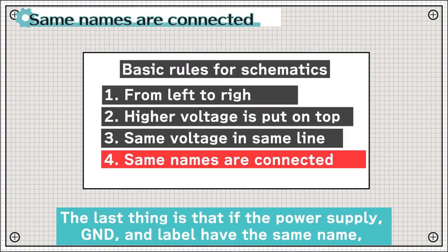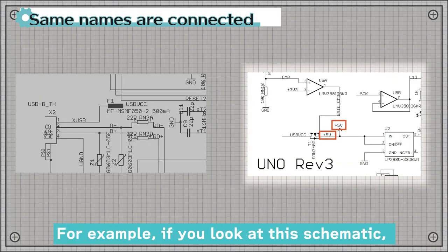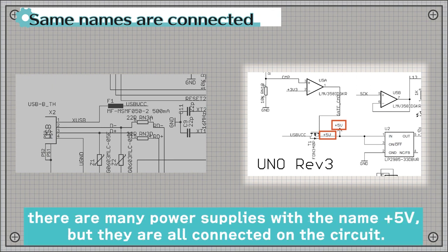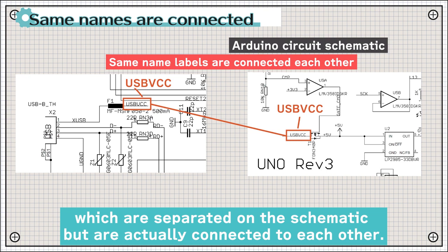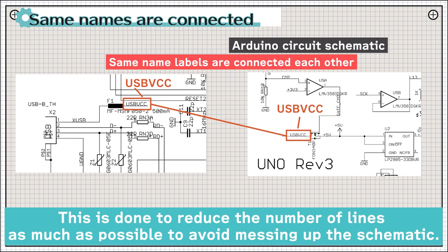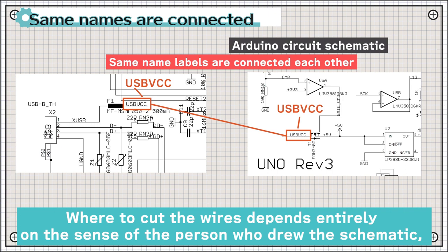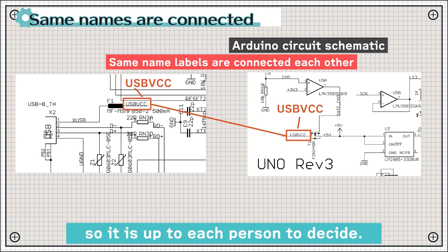The last thing is that if the power supply, ground, and level have the same name, they are connected to each other. For example, if you look at this schematic, there are many power supplies with the name PLUS5B, but they are all connected on the circuit. There are also signals with the same name, USB-VCC, here and here, which are separated on the schematic but are actually connected to each other. This is done to reduce the number of the lines as much as possible to avoid messing up the schematic. Where to cut the wire depends entirely on the sense of the person who draws the schematic, so it is up to each person to decide.